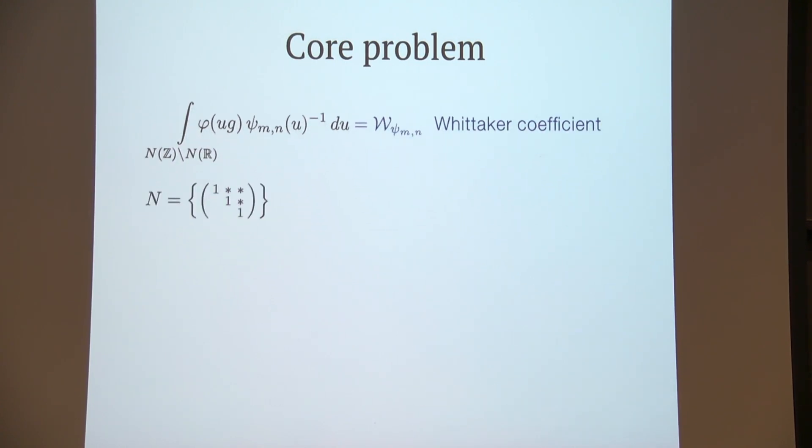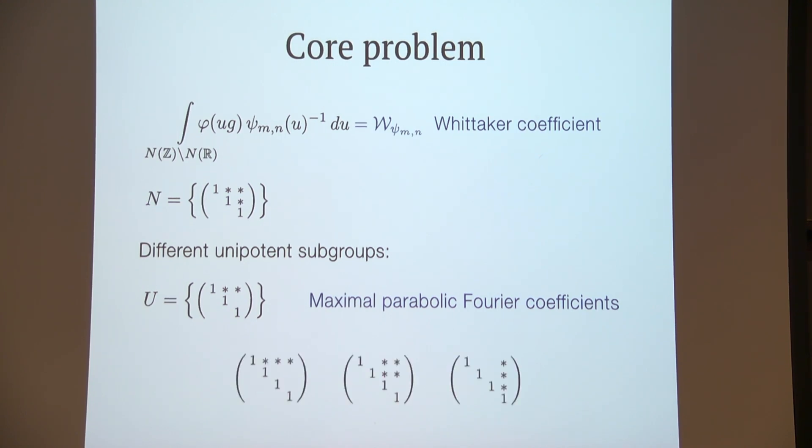Now this particular Fourier coefficient where we integrate over the whole of N, all the upper triangular matrices, it's got a special name—it's called a Whittaker coefficient and is denoted by W. There are other Fourier coefficients with special names. If we take a different unipotent subgroup, for example this one, the corresponding Fourier coefficient is called maximal parabolic. I'll show here some other examples for a larger group where we take these unipotents instead—they're also maximal parabolic.